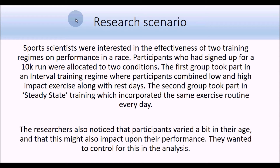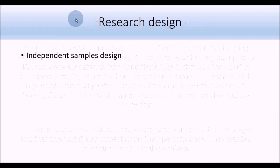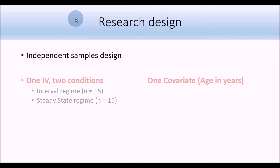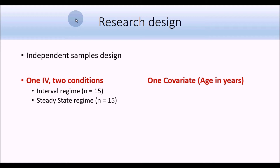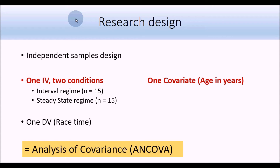They weren't really interested in the effects of age on race time, but just wanted to control for it. This is an independent sample design with one independent variable — the training regime — with two conditions. We also have a covariate, the participant's age, included in the ANCOVA to control for the effects of age, in order to look for any effects of condition above and after partialling out the effects of age. The dependent variable was race time, making this a design suitable for analysis of covariance.